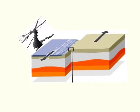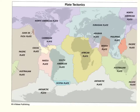Most earthquakes occur along plate boundaries. The lithosphere, or outer rigid shell of the Earth, is broken into about 12 large tectonic plates, each moving relative to the others. In this diagram, we can see the tectonic plate boundaries around the lithosphere.